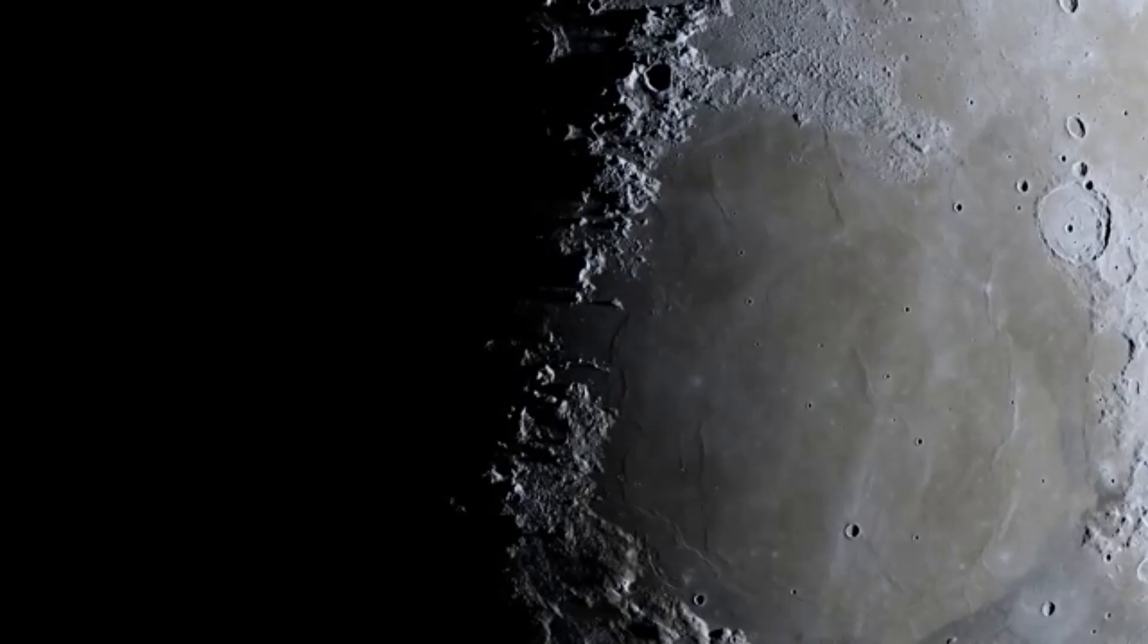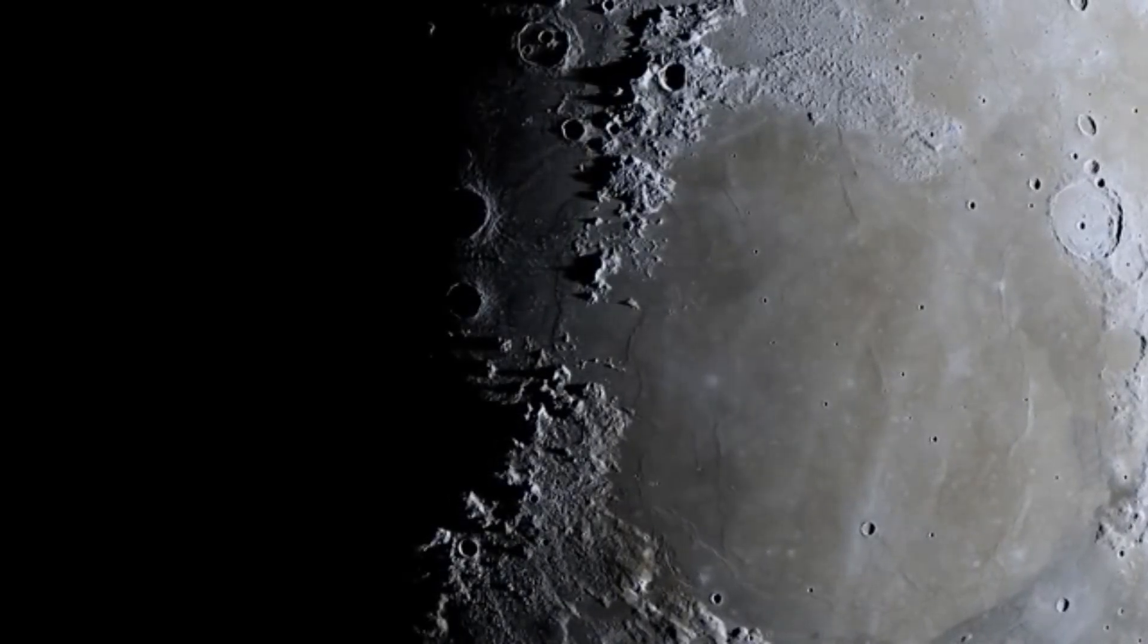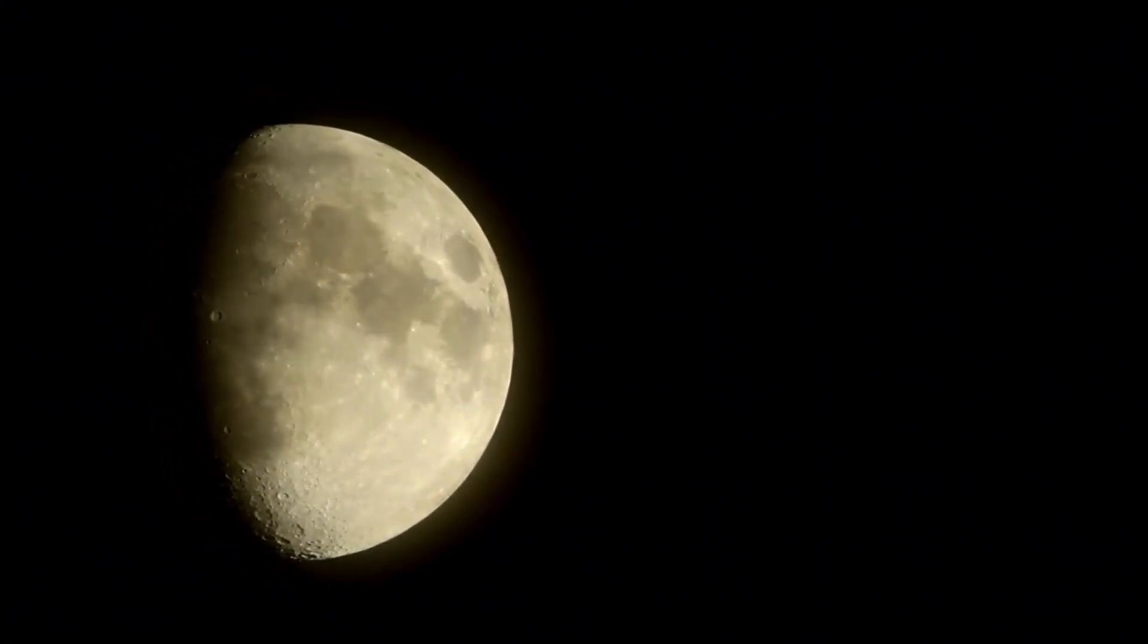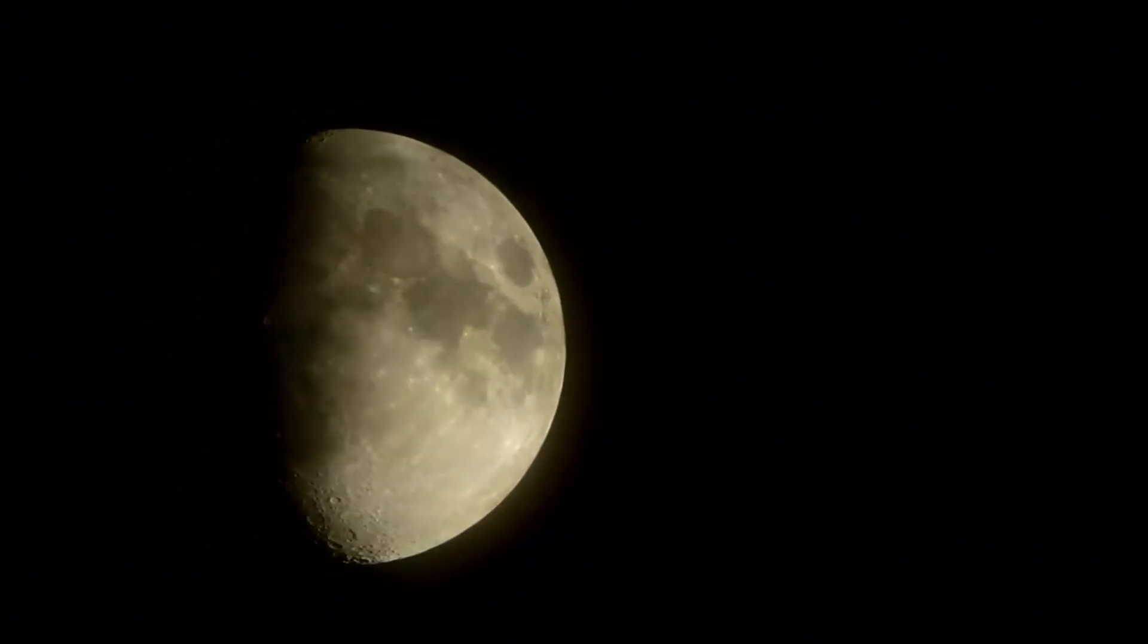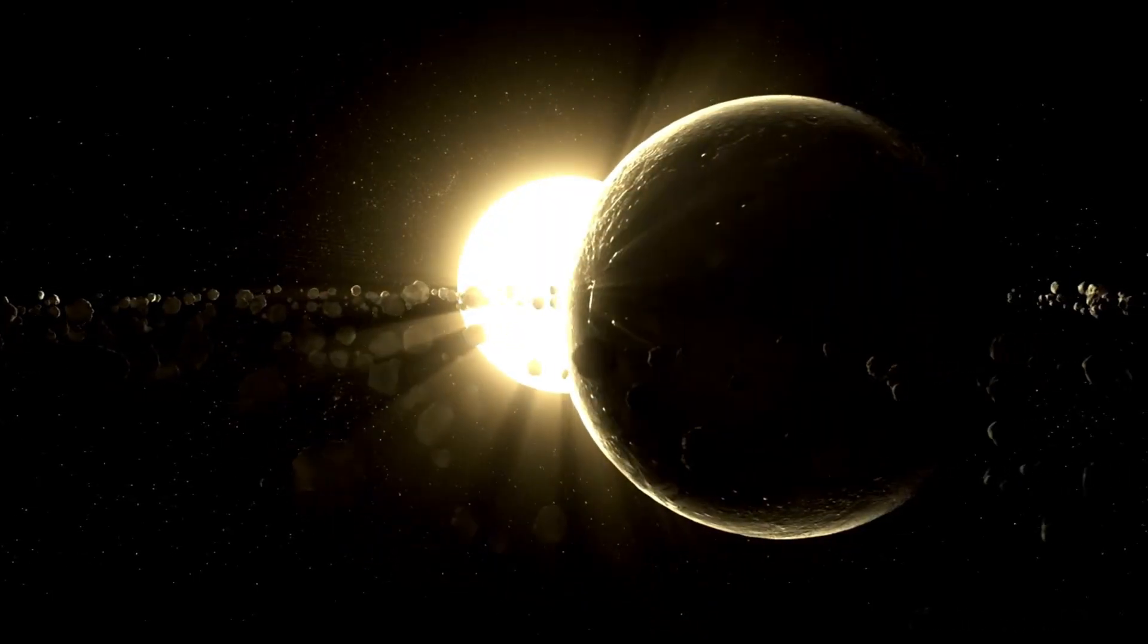During times of high solar activity, the amount of radiation reaching Earth also increases. Satellites and other spacecraft are especially vulnerable to raised solar activity. The charged particles from the sun can damage electronic parts, disrupt communication signals, and even alter satellite orbits.